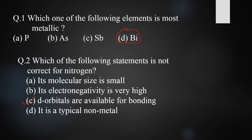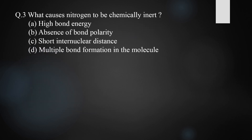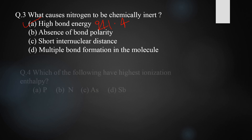Question three: what causes nitrogen to be chemically inert? Options are high bond energy, absence of bond polarity, short internuclear distance, and multiple bond formation. The correct answer is option one — high bond energy. Nitrogen has very high bond energy, so it requires very high energy to break its bonds. The bond energy of nitrogen is 941.4 kJ/mol, which is why it acts as a chemically inert compound.